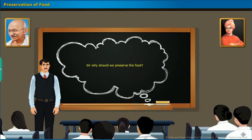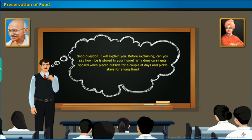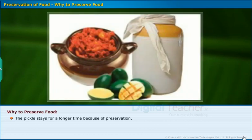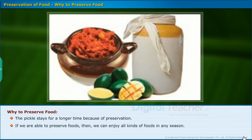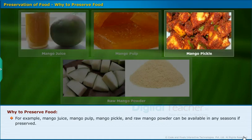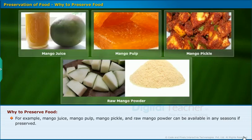Sir, why should we preserve the food? Can you say how rice is stored in your home? Why does curry get spoiled when placed outside for a couple of days while pickle stays for a long time? The pickle stays longer because of preservation. If we are able to preserve foods, we can enjoy all kinds of foods in any season. For example, mango juice, mango pulp, mango pickle and raw mango powder can be available in any season if preserved.